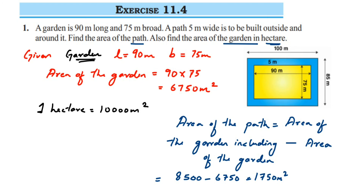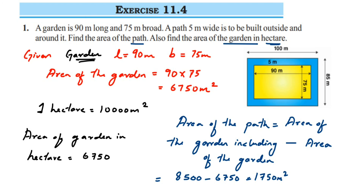So the area of the garden in hectares is equal to 6750 divided by 10000, which equals 0.675 hectares.